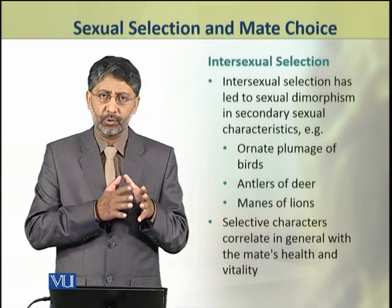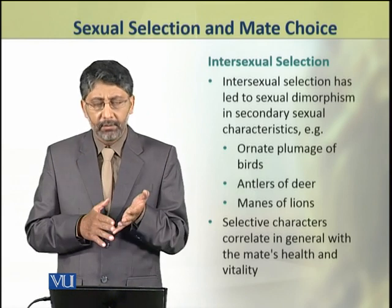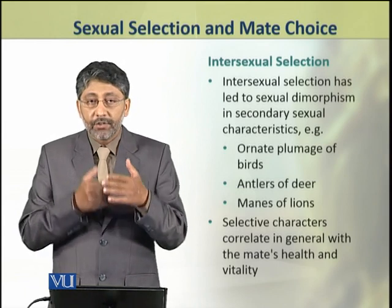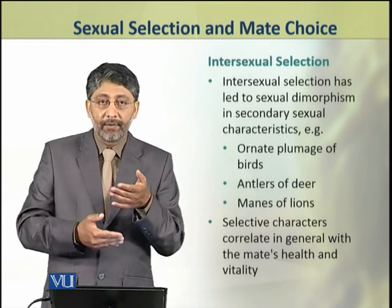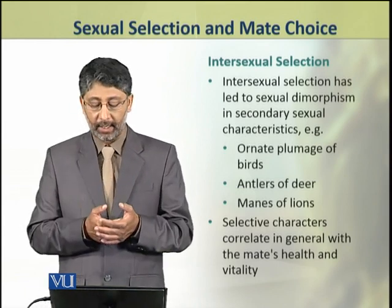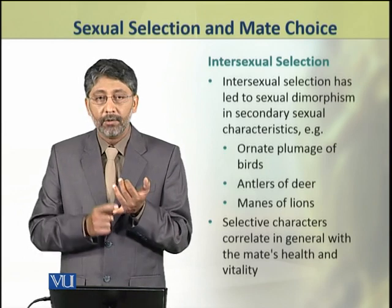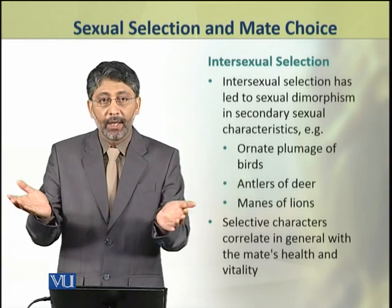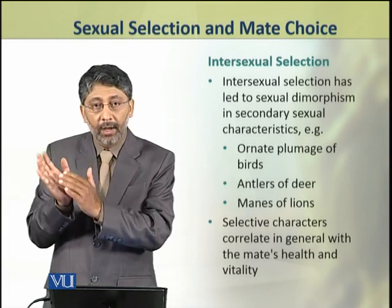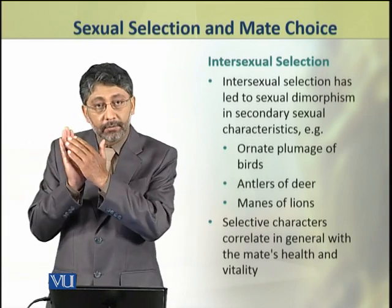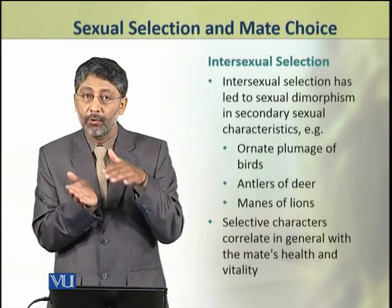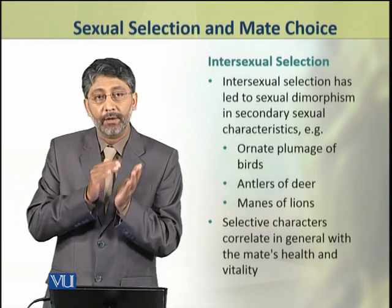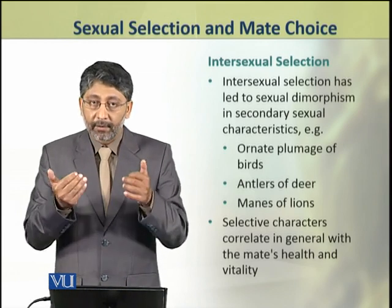During evolution, different species may develop different types of features which can attract members of the opposite sex. For example, the ornate plumage of birds — the highly ornamented, beautified plumages in birds are actually secondary sexual characters to attract mates.